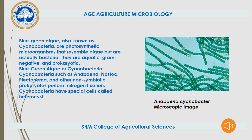In this slide let's see what is BGA. Blue Green Algae, also known as Cyanobacteria, are photosynthetic microorganisms that resemble algae but are actually bacteria. They are aquatic, gram-negative, and prokaryotic. Cyanobacteria such as Anabaena, Nostoc, Plectonema, and other symbiotic prokaryotes perform nitrogen fixation. Cyanobacteria also have special cells called heterocysts.